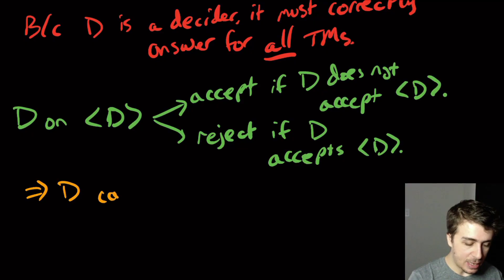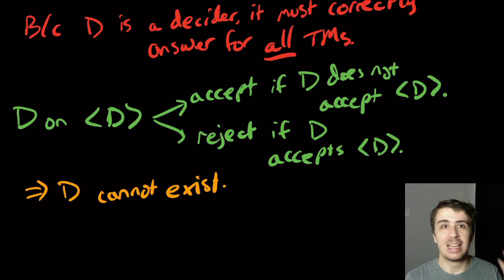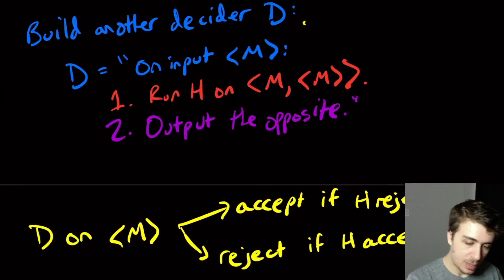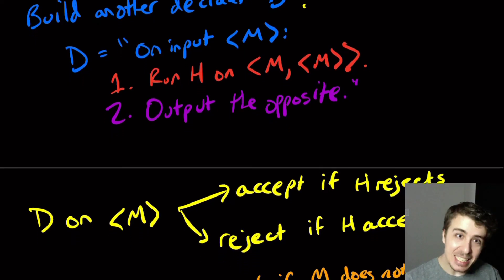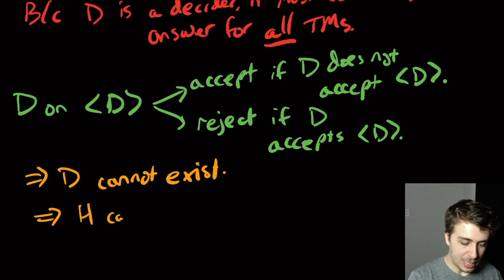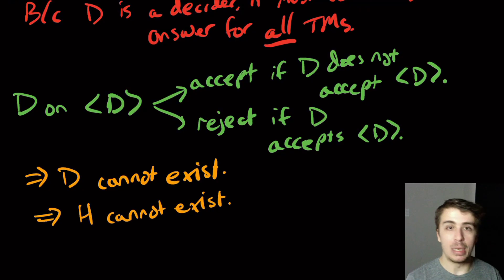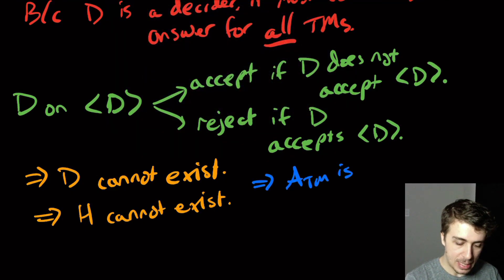So this means that D cannot exist. This machine cannot possibly exist, because we assumed that it was a decider, which means it must correctly get the right answer on all inputs, but it just got it wrong on at least one input. So therefore, it's not a decider, and so it cannot exist. The only way that this could happen, though, is the only thing that we really relied upon to build this machine D was the construction of this H machine. So there's no other assumptions here other than this one. So that means that in order for the D machine to exist, the H machine has to exist. But because the D machine doesn't exist, that means that the H machine can't exist. So H cannot exist. And remember that H was the supposed decider for ATM. And so now we didn't make any assumptions about it, other than that it existed, and we just showed it can't exist. And so therefore, what we can conclude is that ATM is undecidable.